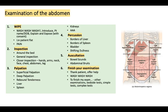After palpation comes percussion. Start by percussing the border of the liver, then the borders of the spleen. In some examinations, you also percuss the bladder. You can also do shifting dullness: start percussing from the umbilicus towards the left lumbar region until you feel dullness. Ask the patient to turn towards you, wait about 30 seconds, then start tapping again. As you tap back into the midline, if you feel dullness, this suggests fluid is shifting across — remember, when you percuss, fluid sounds dull.